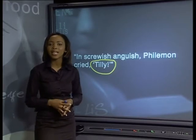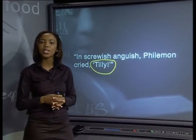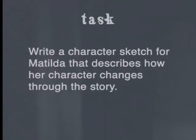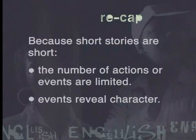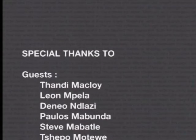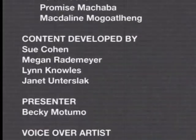We have looked at the character of Philemon from 'The Suit' as our example, but you should be able to find clues about any main character in any short story and see how they change and develop as the plot unfolds. For today's task: write a character sketch for Matilda that describes how her character changes through the story. Remember to support the claims that you make about her character with evidence from the text. In the next lesson, we will look at how conflict is used for characterization in the short story. Until then, goodbye from me.